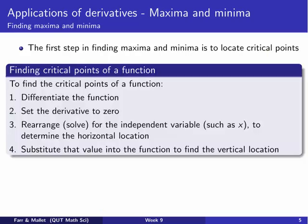So how do we find these things? The first step to finding where maxima and minima are is to locate the critical points. Finding them is a four-step process: first, differentiate the function; second, set that derivative to zero; third, solve the resulting equation to figure out what the x value is; and fourth, substitute the value into the function to find the vertical location. That gives us the critical points of the function — not necessarily the local maxima and minima, but certainly one step along the way.